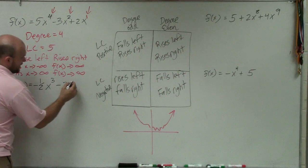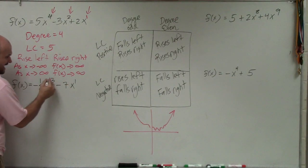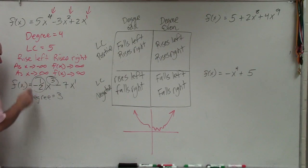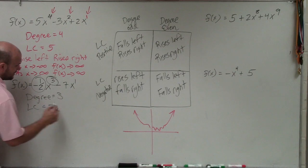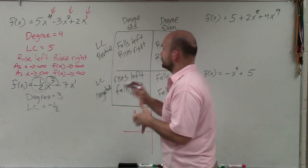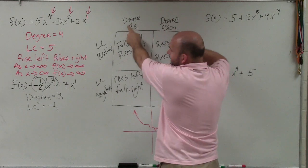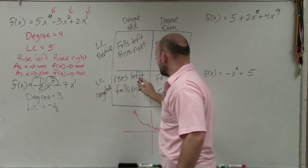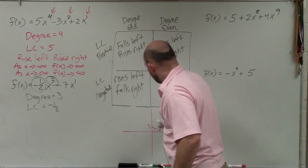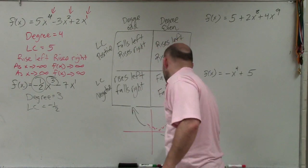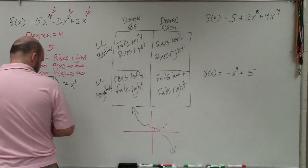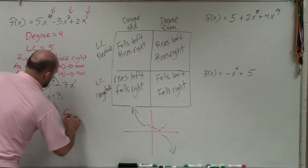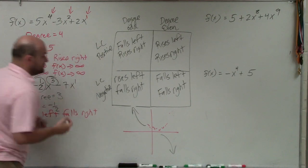In the next example, the exponents are again in descending order. The degree is 3 and the leading coefficient is negative — and it's a fraction, which is okay. Since the degree is 3, it's odd. The leading coefficient is negative, so my graph rises to the left and falls right.